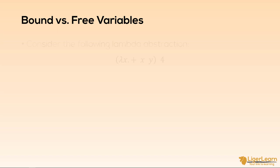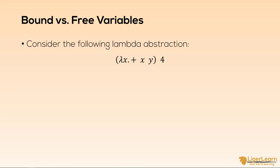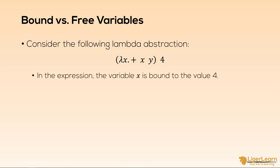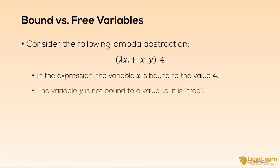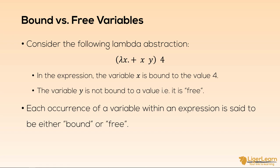Let's consider the following lambda expression: lambda x and the function which adds two variables, x and y, also applying the constant 4 to the expression. A binding links a variable name to a value. In this expression, the variable name x is bound to the value 4, because the lambda abstraction defines the variable name in the abstraction as x. In contrast, within this particular expression, we cannot see lambda y anywhere, and so the variable y is not bound to a value — it is said to occur free in the expression. Each occurrence of a variable within an expression is said to be either bound or free.